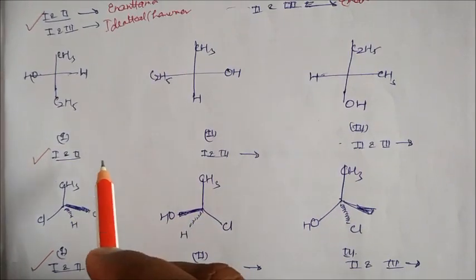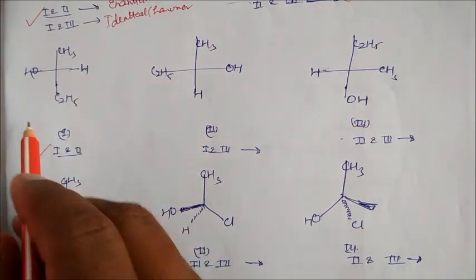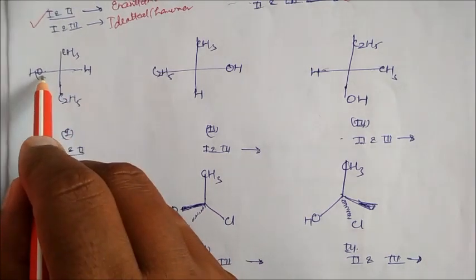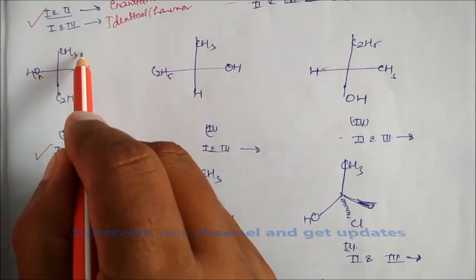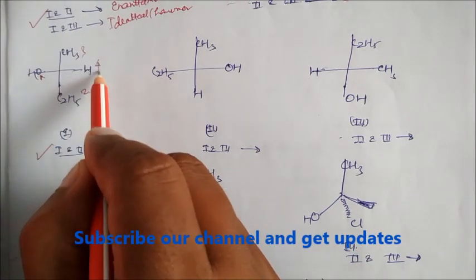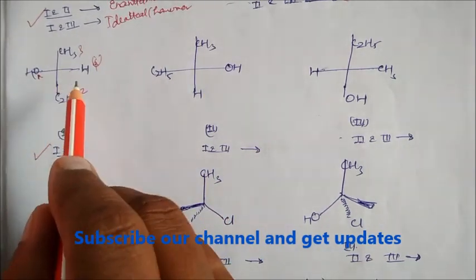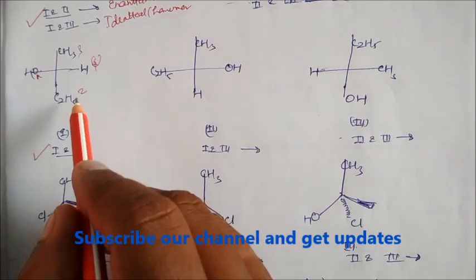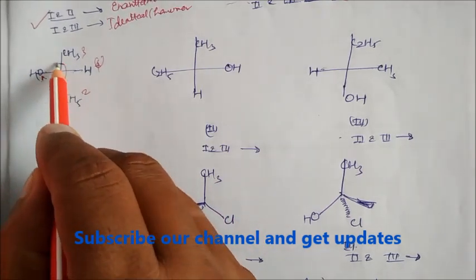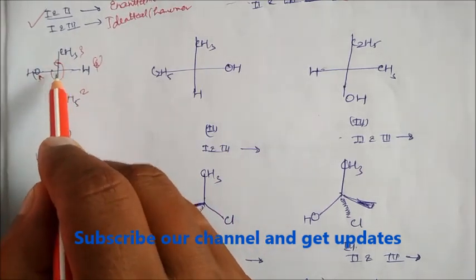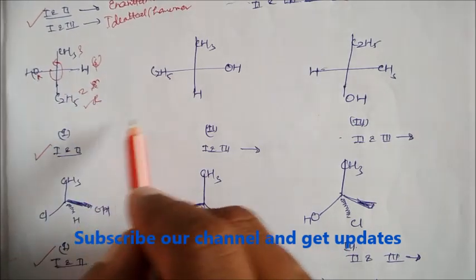Let's take one more example. So CH3, OH, and hydrogen, C2H5. The atomic number is high, so this is 1, this will be your 2, this will be your 3, and this is the 4th. Now, the 4th is on the horizontal line. So whatever we are observing, we will take the opposite. So 1, 2, 3 — it looks like S, but this is not S; it is actually R.